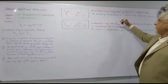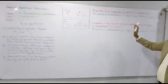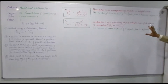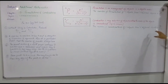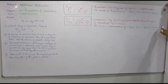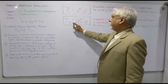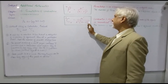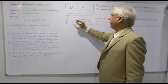Combination, in contrast, is a selection of objects where the order of the objects is immaterial — of no concern. The number of combinations of r objects from n different objects is given by: C(n, r) equals n factorial over r factorial times (n minus r) factorial.